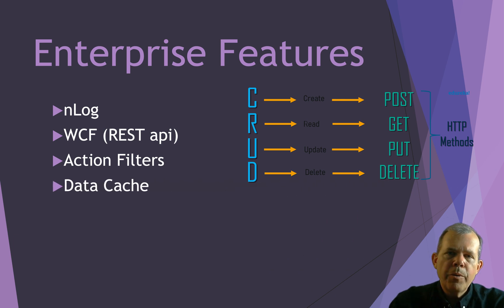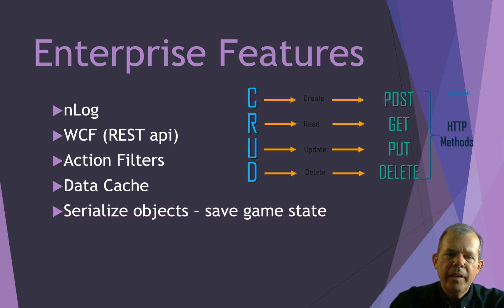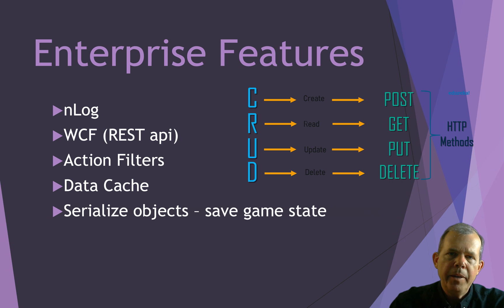We're also going to focus in on data caching, which may be necessary if your website is experiencing high workloads, and you might be able to help out with a few things such as data caching. We're also going to serialize objects. Serialization means that you can take a complex set of data and put it into a string. In our case, we're going to save a string into the database, which will save the state of a game, so that way you can resume the game very quickly after you start the program again.